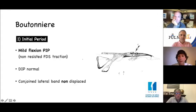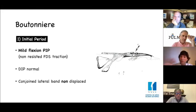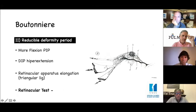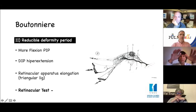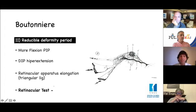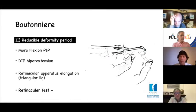In the initial period, there is only mild PIP flexion because the central slip is injured with non-resisted traction of the FDS. The DIP is normal without hyperextension and the conjoined lateral bands remain dorsal to the axis of rotation. In stage 2, we have a reducible deformity with DIP hyperextension, and the retinacular apparatus is elongated — especially the triangular ligament — causing the conjoined lateral bands to fall below the axis of rotation of the PIP.